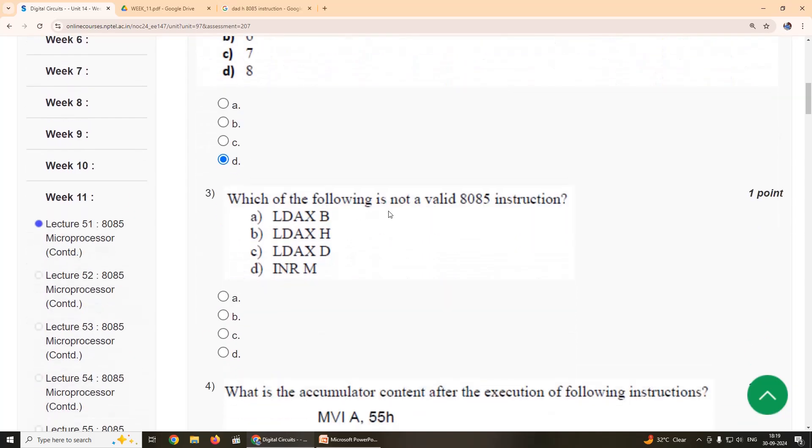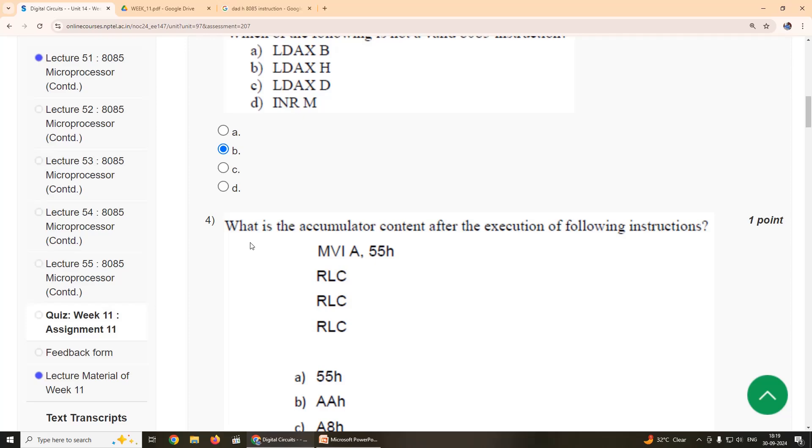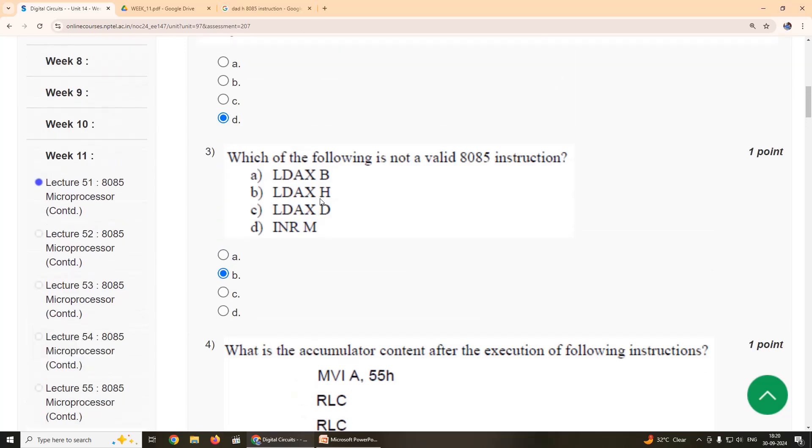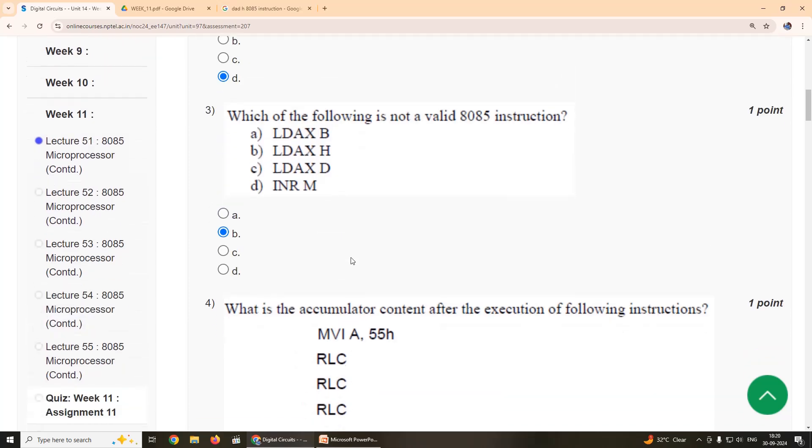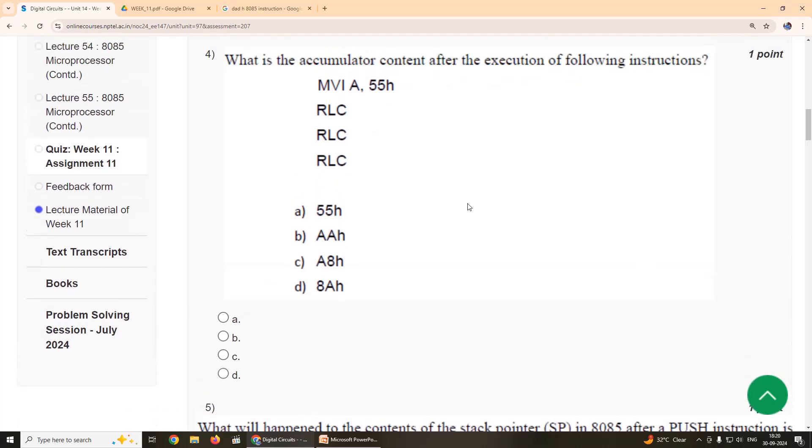Which of the following is not a valid 8085 instruction? So our suggestion is option C. LDAXB. LDAXB is option B. Our suggestion is not a valid instruction. Fourth question: What is the accumulator content after the execution of the following instruction? So our suggestion is B, AA. AA is our suggestion.